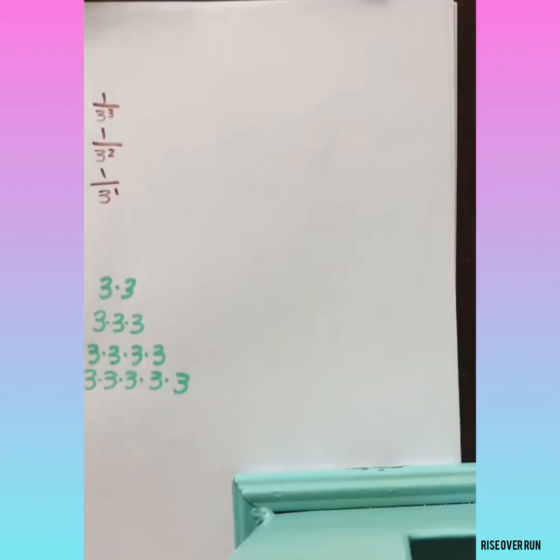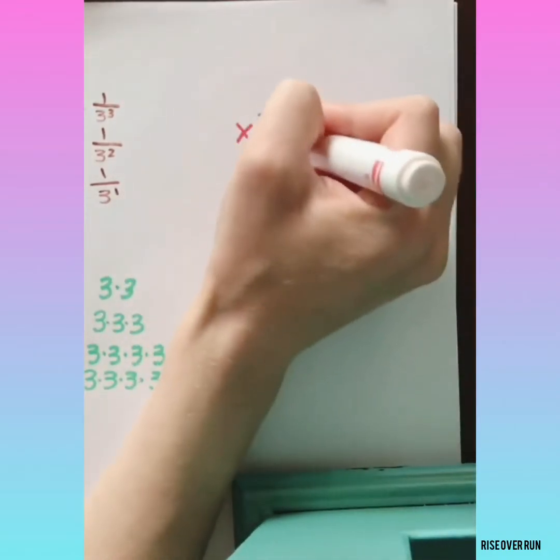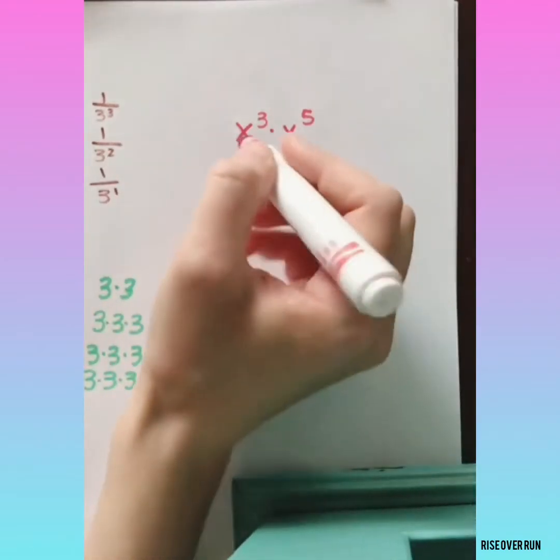Okay, let's look at some other exponent rules. What if we have x cubed times x to the 5th? Let's expand this to see what happens.